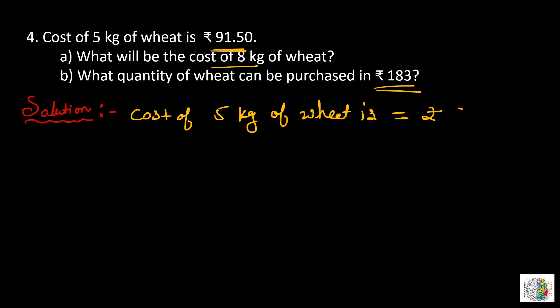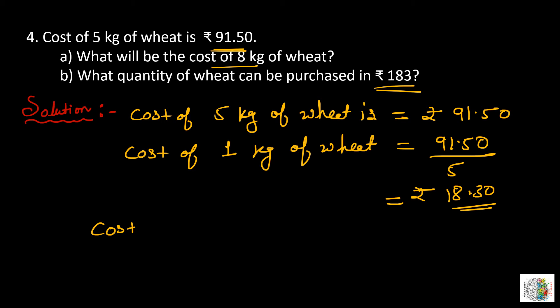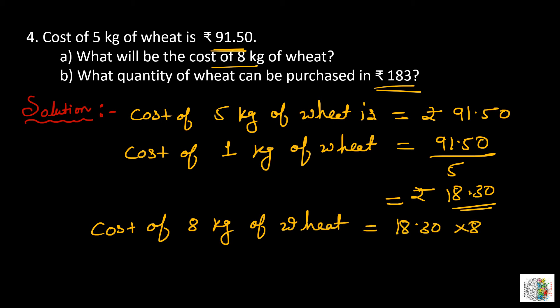Cost of 5 kg of wheat is equal to rupees 91.50. Therefore, cost of 1 kg of wheat is equal to 91.50 divided by 5, which is equal to rupees 18.30. Agar hum 1 kg of wheat buy karte hain to 18.30 rupees pay karne honge. Now cost of 8 kg of wheat is equal to 18.30 into 8, which is equal to rupees 146.40.